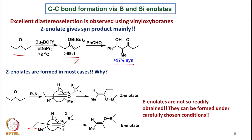Why is it that Z enolates are formed in most cases? If we take the Newman projection of the transition state, we can see that the methyl group and the ethyl group are away from each other in one conformation. In the other conformation, the methyl and ethyl groups are on the same side, creating a tremendous amount of steric hindrance. Therefore, the methyl group prefers to be away from the ethyl group and remain in that direction. When that preferred orientation of the methyl group is adopted, deprotonation gives the Z enolate as the major product. The E enolate would come from the other orientation.